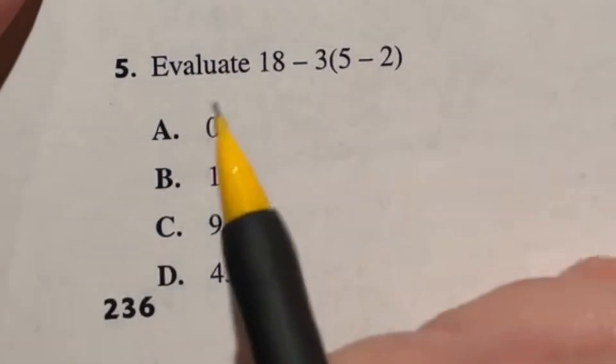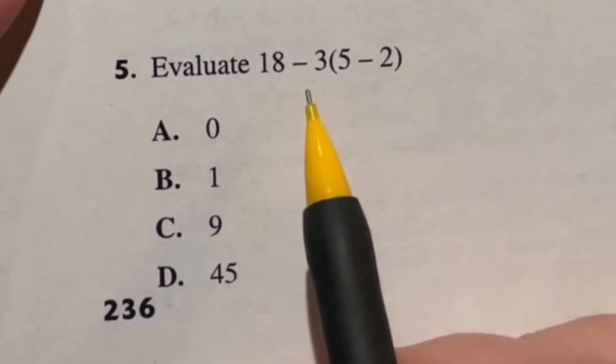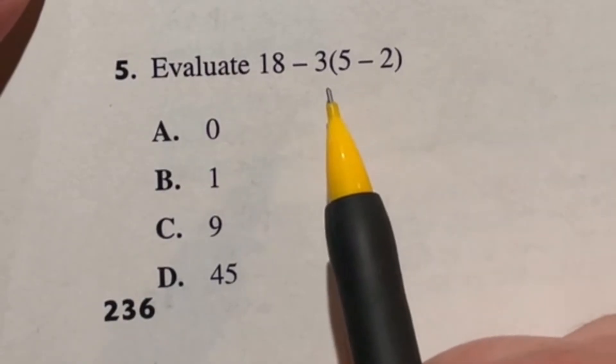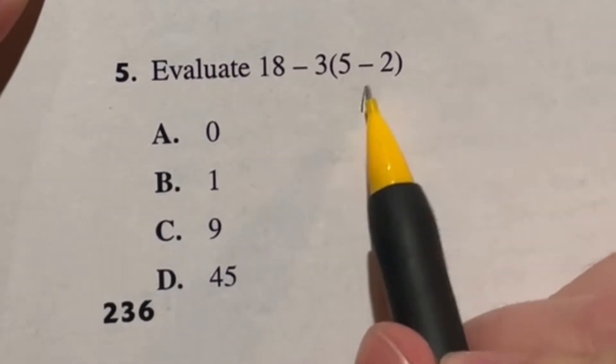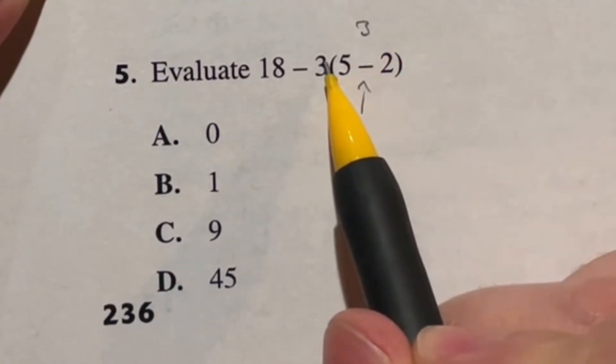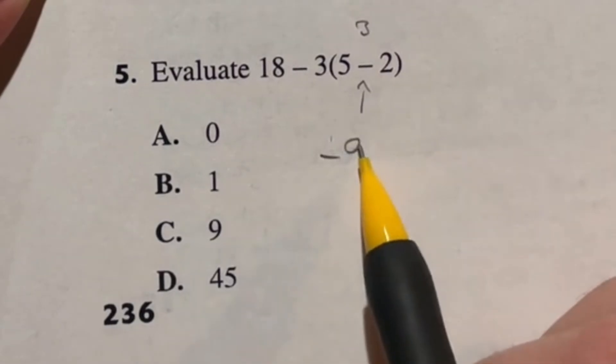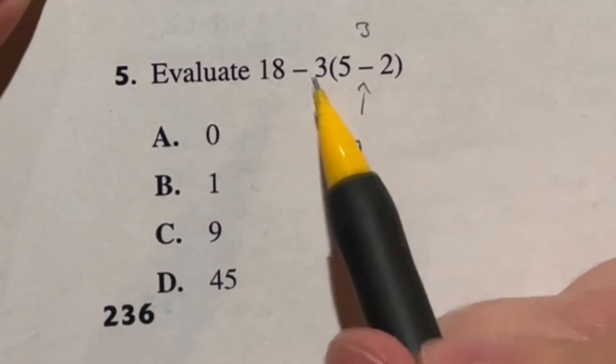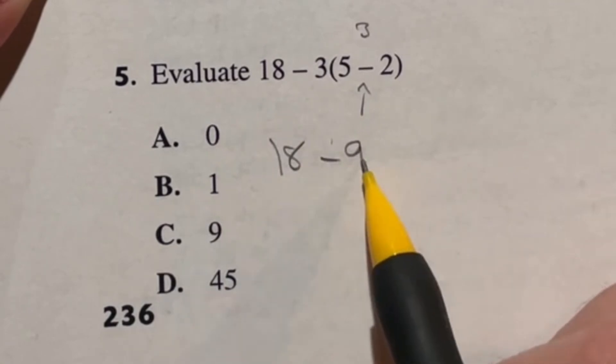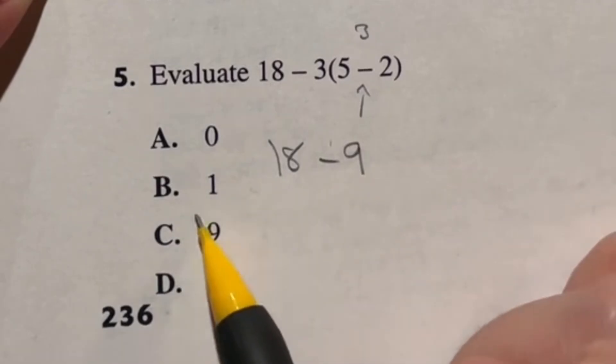I don't know, is this one meant to be a joke or what? Number five says evaluate 18 minus three times the quantity five minus two. This is your basic order of operations here. So that means we're doing the items in parentheses first. Five minus two is going to give me three, three times negative three is going to give me negative nine, because we multiply before we do this subtraction. So really, our final answer here should be whatever 18 minus nine is, which is just nine. So our answer is C.